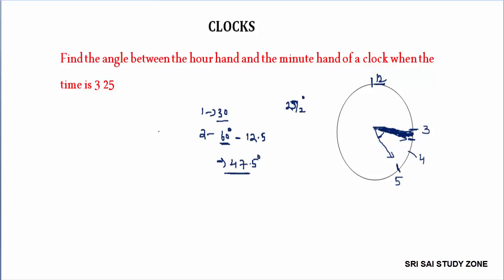If you have a formula, you have 4 steps. If you have a question, you have to answer it. For example, 5 hours and 10 minutes: first, the concept is 5 hours. Then 10 minutes: 10 by 2 equals 5. The result is 145 degrees.